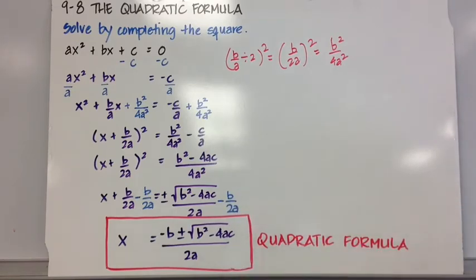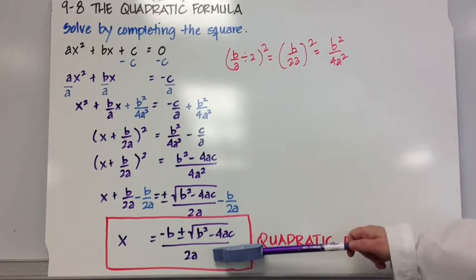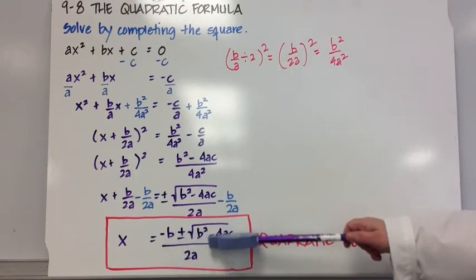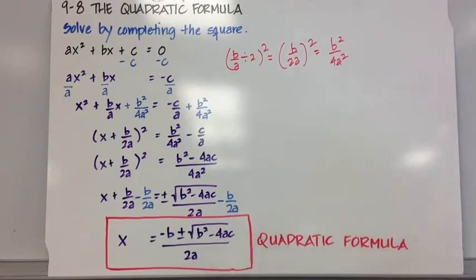So I can use the commutative property and rewrite that as negative b plus or minus the square root of b squared minus 4ac all over 2a. And that's what's known as the quadratic formula.